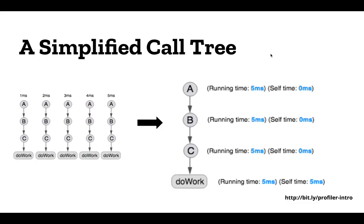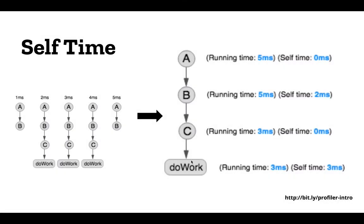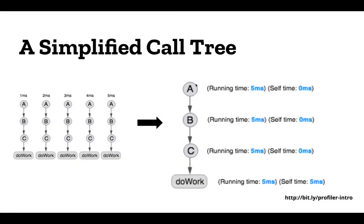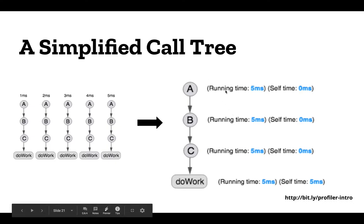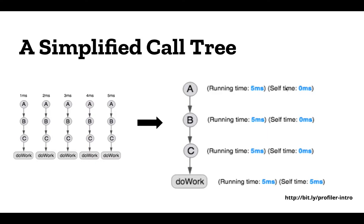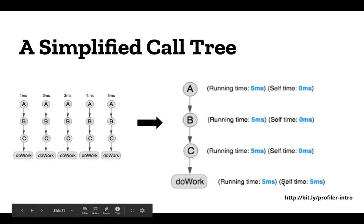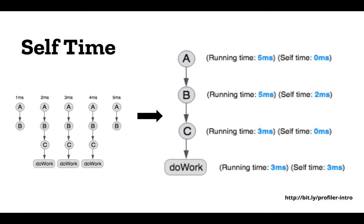The structure you summarize with is the call tree. This diagram shows a simplified version: taking five samples each one millisecond apart, you have A calls B calls C and finally 'do work' is where the work is actually being done. If you combine all those together you get A calls B calls C calls 'do work', and the running time for all of these is five milliseconds. What's interesting is the self time — the self time is the only parameter that changes across the tree. The self time for the last sample is five milliseconds because that's what was actually doing the work.